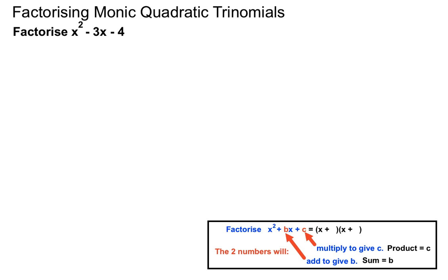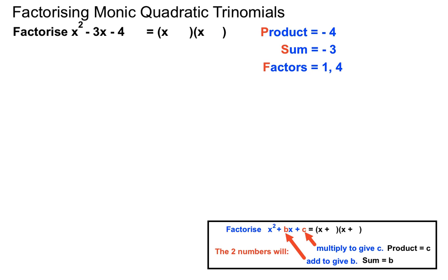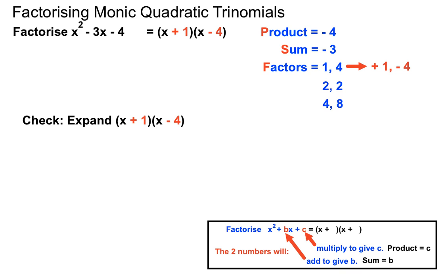Another example: x squared minus 3x minus 4. The product needs to be minus 4 and the sum minus 3. Factors of 4 are 1 and 4, and 2 and 2. The pair 2 and 2 won't give minus 3 in any arrangement, but plus 1 and minus 4 will multiply to give minus 4 and add to give minus 3. So the factorisation is (x + 1)(x − 4). Expanding that confirms we get back to the original expression.